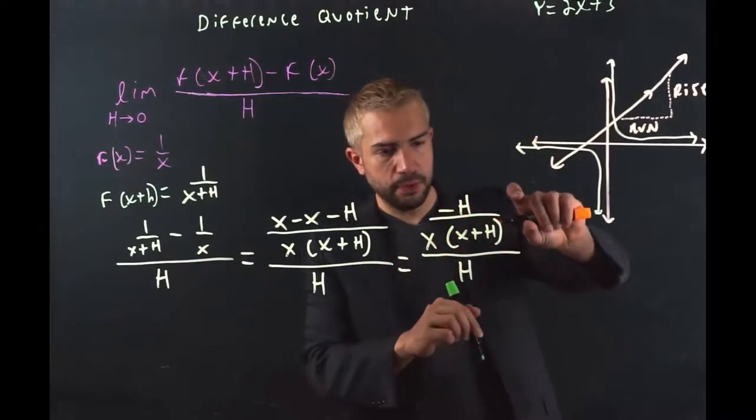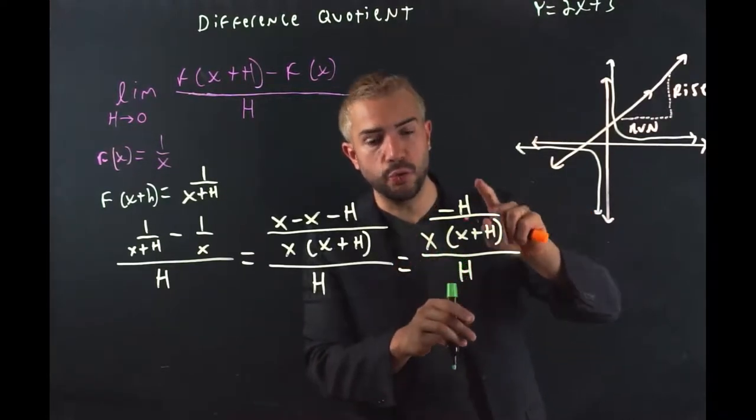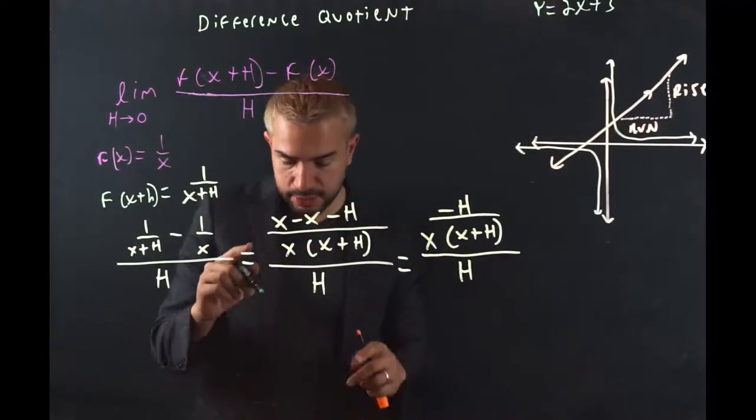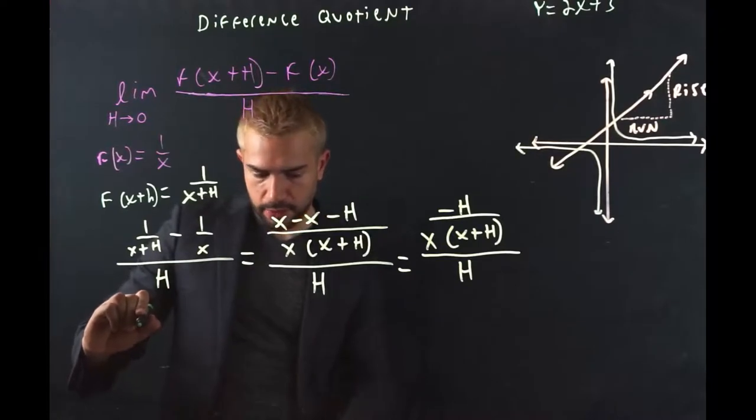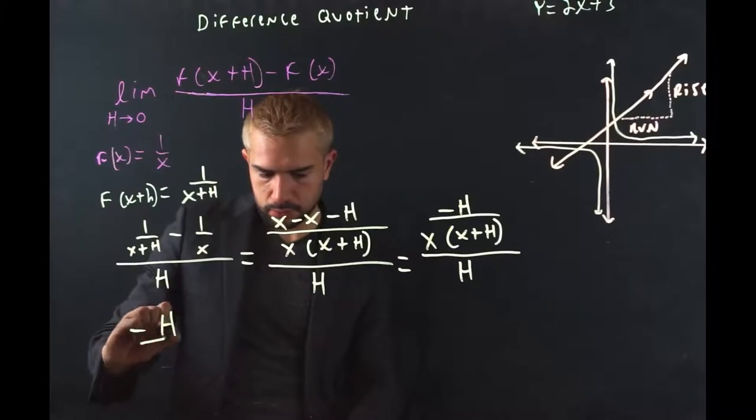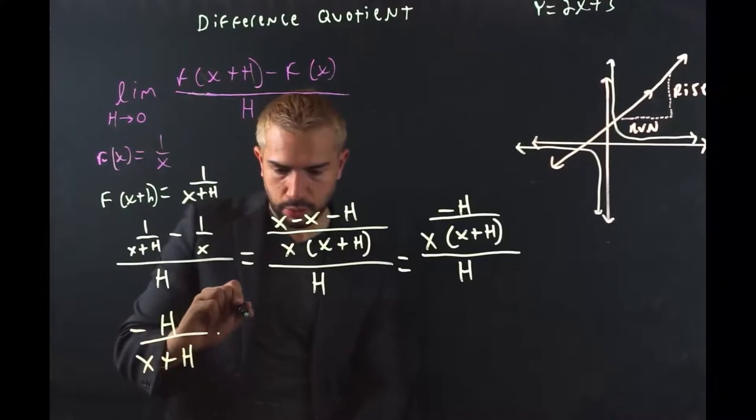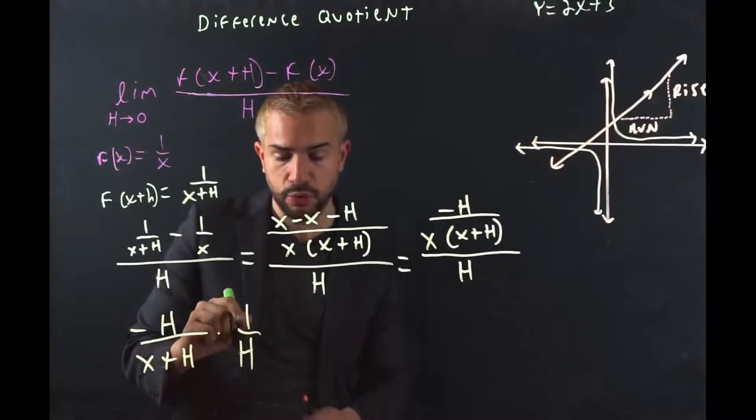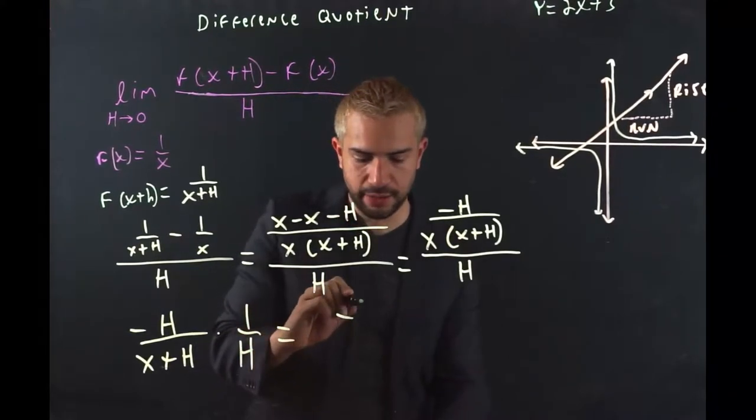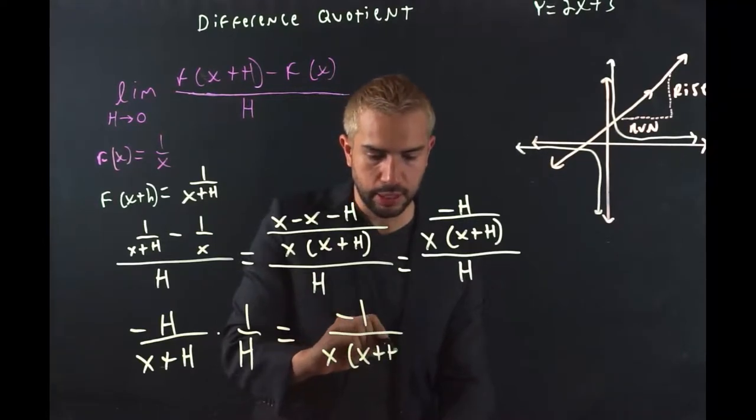So we have this fraction essentially multiplied by the reciprocal of h, which is 1 over h. And once you do that, I'm going to baby step this. So we have negative h over x times (x + h). Multiply that with 1 divided by h. Remember, 1 over h is the reciprocal of h. We multiply those two, and we get negative 1 divided by x times (x + h).